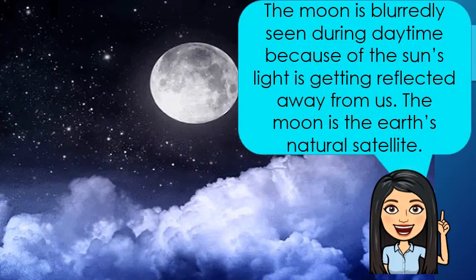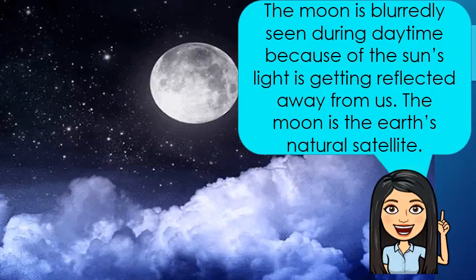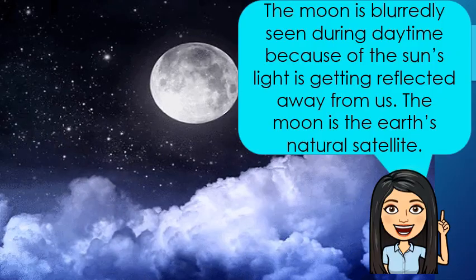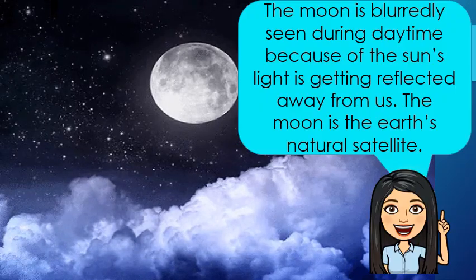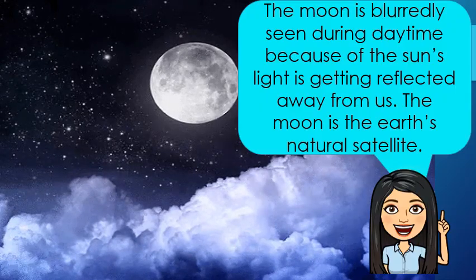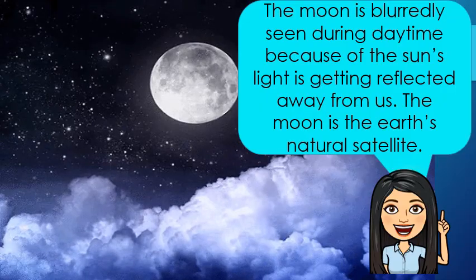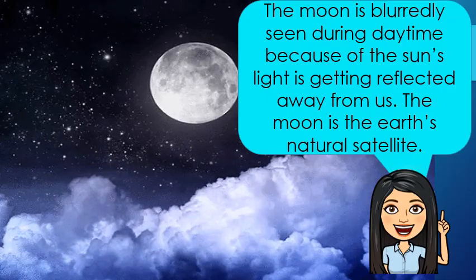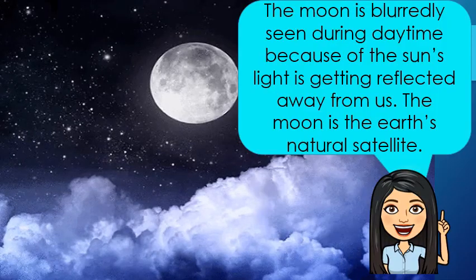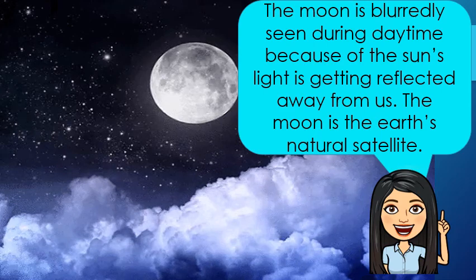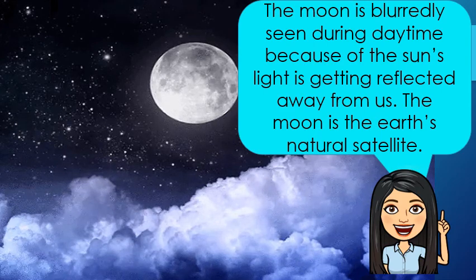The moon is blurredly seen during daytime because the sun's light is getting reflected away from us. The moon is the Earth's natural satellite. The surface of the moon is full of holes and dark patches. Do you know that the moon is Earth's nearest neighbor? The moon has no soil and water. It is round like Earth.